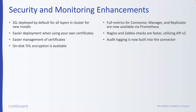For monitoring enhancements, we now expose full metrics for all pieces — the connector, manager, and replicator — and they're all available via Prometheus. Our standard checks using Nagios and Zabbix are a lot faster, utilizing API version 2 instead of the shell command, so that's a lot more efficient. We've also built audit logging into the connector. The connector can produce a log to show what queries are going through it — similar to the MySQL general log, but enabled at the connector layer. You can see what queries are being executed by which connector, which is great for debugging and identifying performance issues on a particular app server or connector.